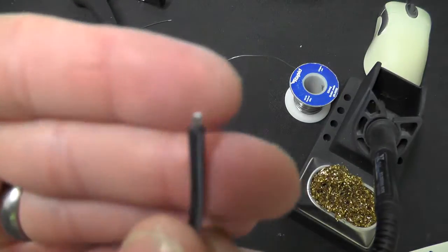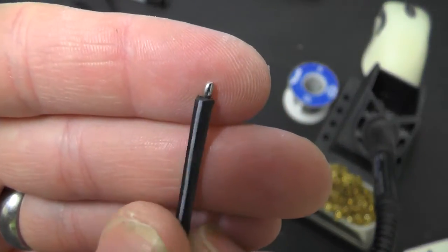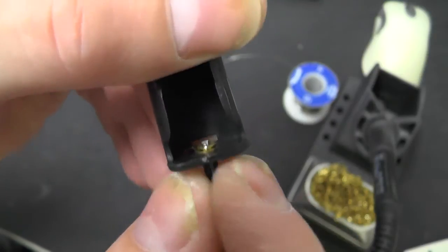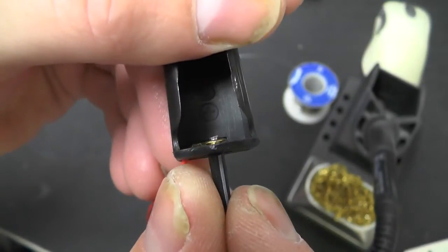So I've just cut down the end of the wire here nice and short, so when it goes in here it doesn't stick out too far. You can file this down once it's soldered anyway.